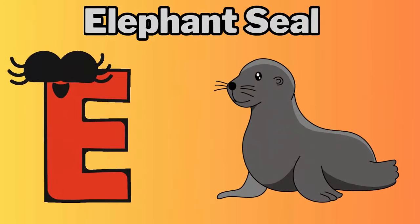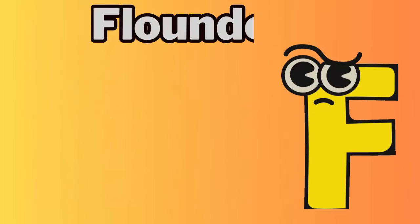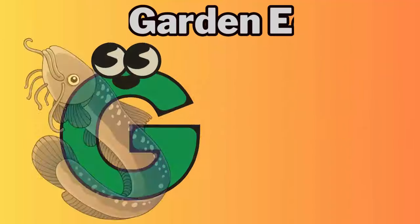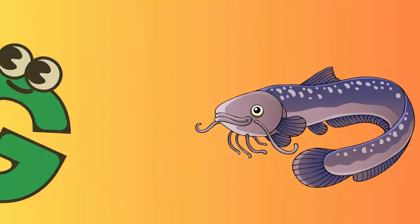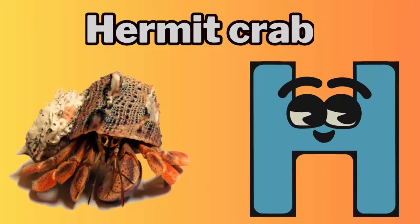E. E for elephant seal. F. F for flounder. G. G for garden eel. H. H for hermit crab.